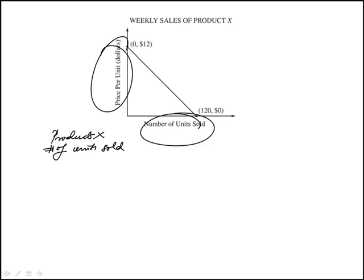They show you this graph. The figure above models this linear relationship. The question is: based on the model, how many dollars would the convenience store expect to earn from its sales of Product X in a week when the price per unit is $5?